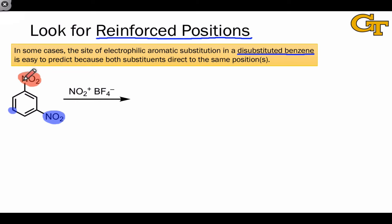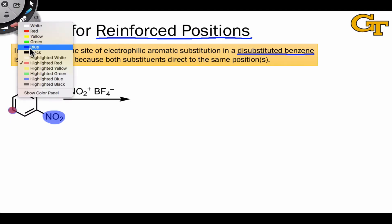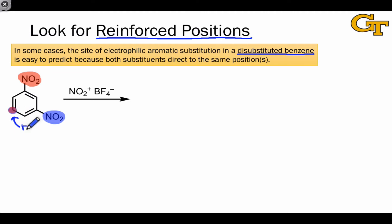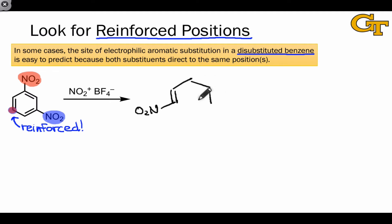If we now turn our attention to the red NO2 group, we see that it also directs to positions meta to itself. But once again, one of those positions already bears a substituent, so we don't have to worry about it. What we find is that both the red and the blue nitro groups are directing to the same position — and in fact there's only one such position. This is what I call a reinforced position. Electrophilic aromatic substitution at this position is reinforced by both substituents. It's very clear then that the only option for substitution is that highlighted position, which is meta to both of the meta-directing NO2 groups already present in the substrate.